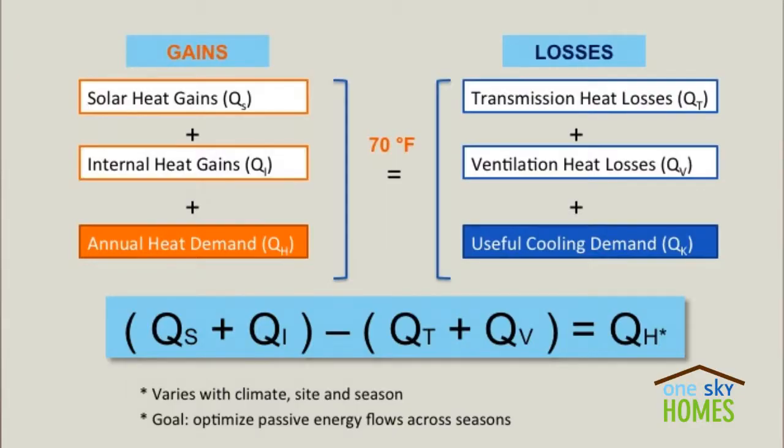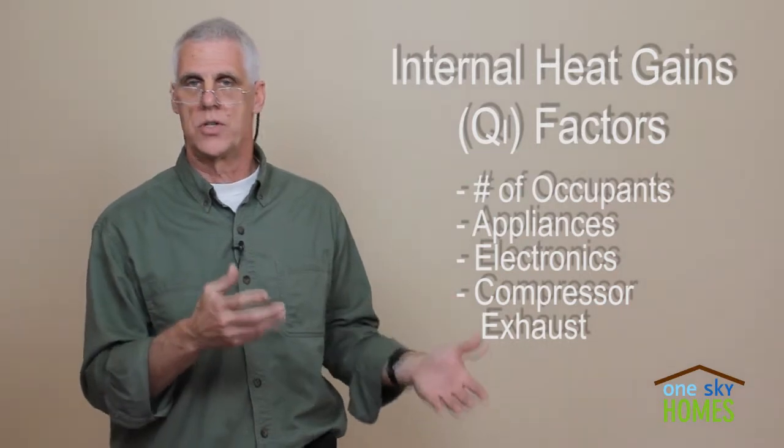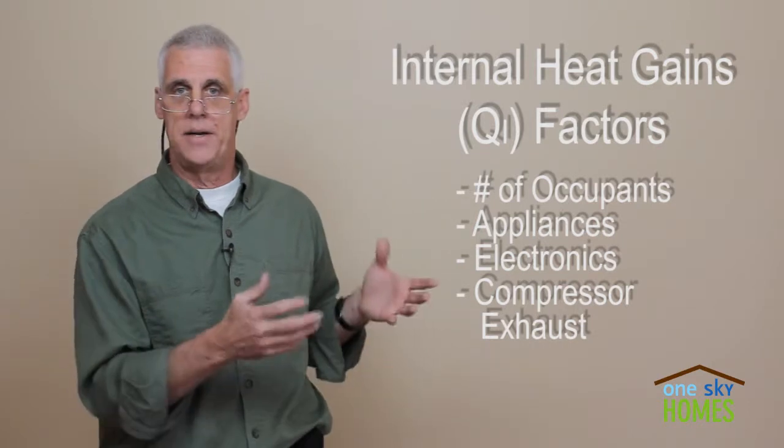The other side of the gain variable is QI — internal heat gains. We have to understand how many occupants we have in the building, whether it's a school, office building, or home, because we all generate a certain amount of heat. And then, of course, there are the appliances and electronics. Essentially anything that uses electricity creates heat. There's refrigeration equipment where there's exhaust heat off of compressors. All of these are internal heat gains and they add to the passive gains in the building.